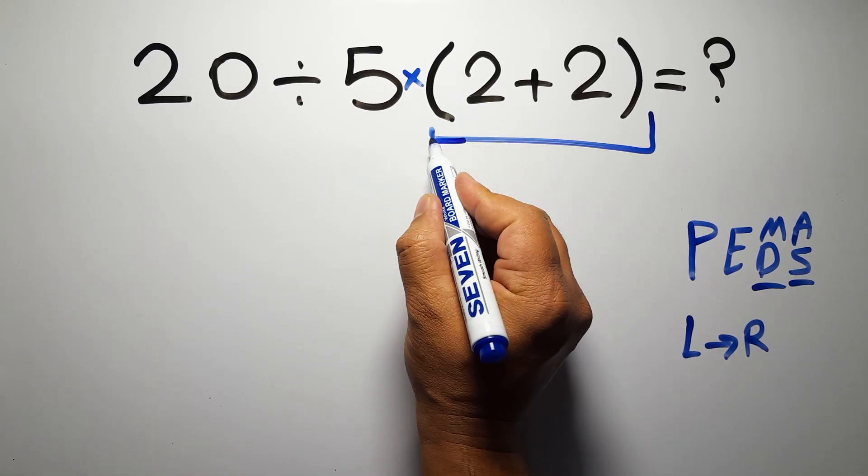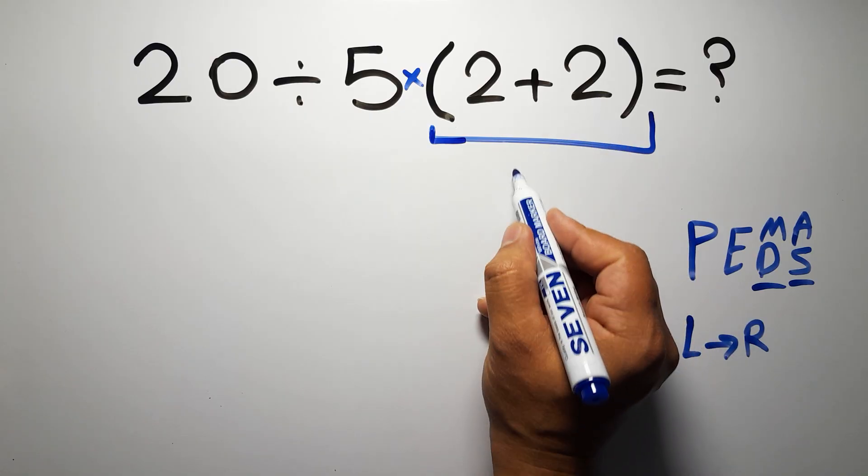So first this parenthesis. Inside this parenthesis, we have 2 plus 2, which gives us 4.